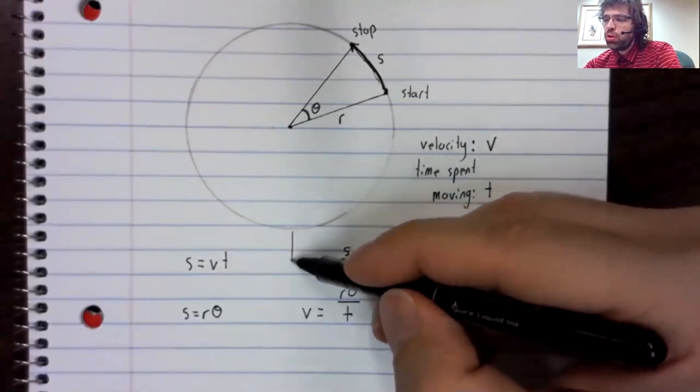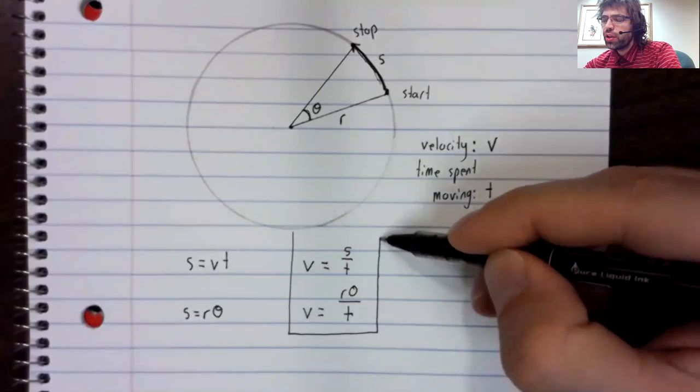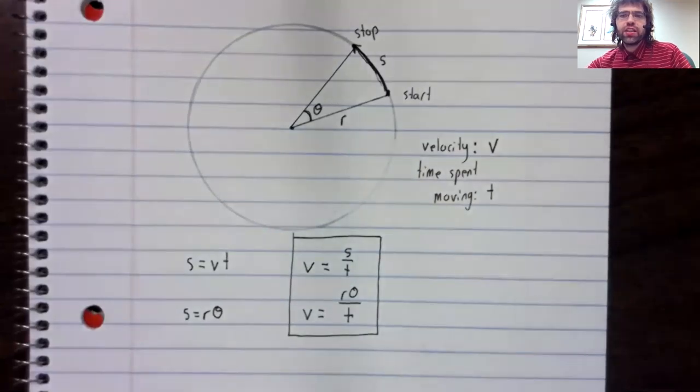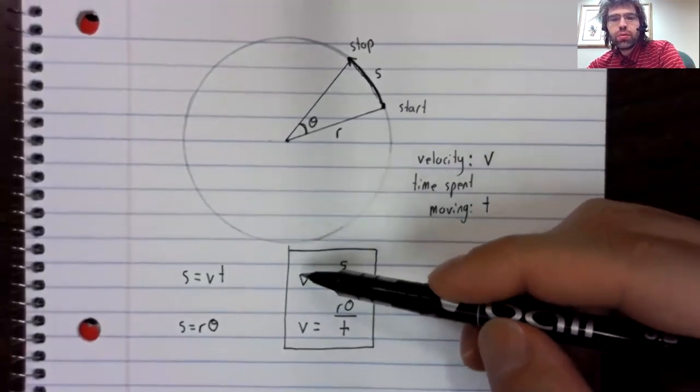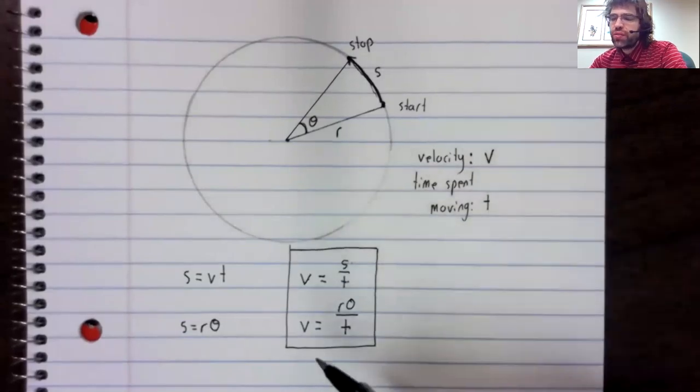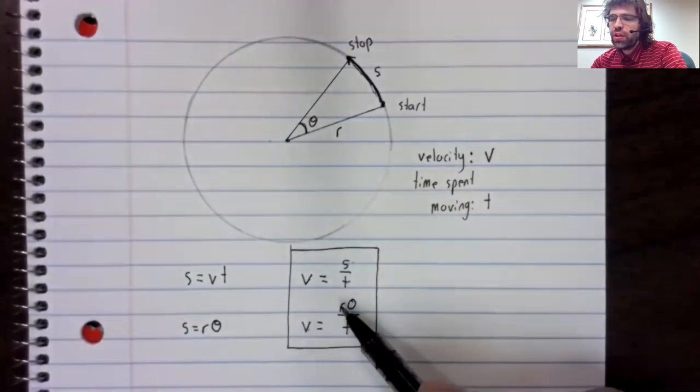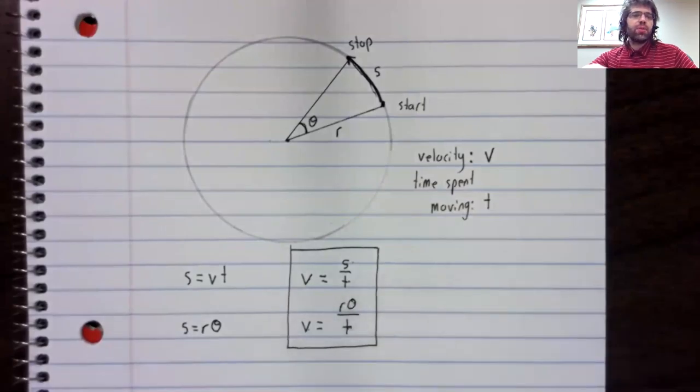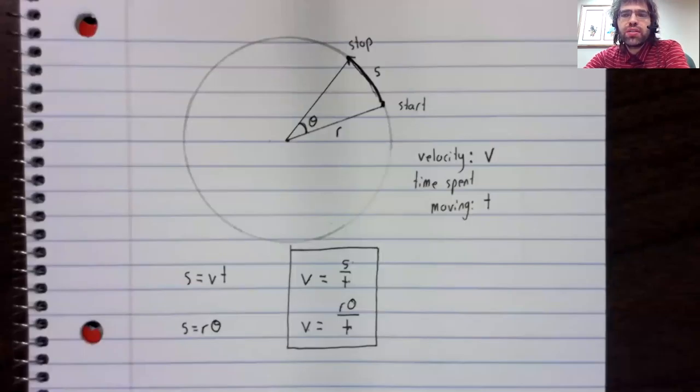So these are both formulas relating velocity to various quantities. This form relates velocity, distance, and time. This form relates velocity, the radius, the angle, and the time. Depending on which information you're given or what you're trying to solve for, one of these formulas might be more useful than the other.